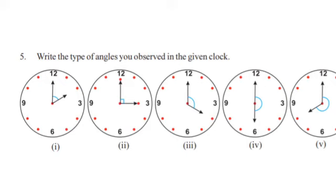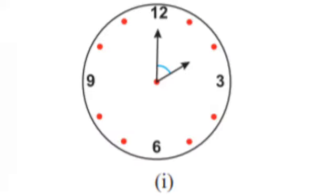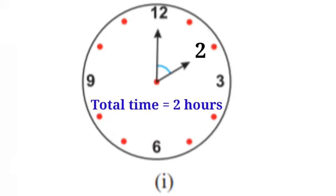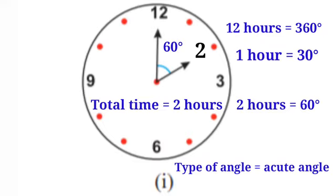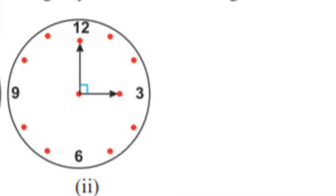Next, problem five: write the type of angles observed in the given clock. First diagram — the long hand is at 12 and the short hand is at 2. In a clock, 12 hours equals 360 degrees, so 1 hour equals 30 degrees. Between 12 and 2 is 2 hours, so 2 × 30 = 60 degrees. The type of angle is acute angle.